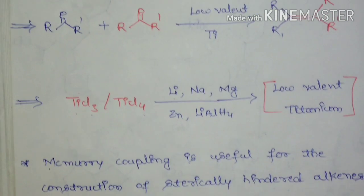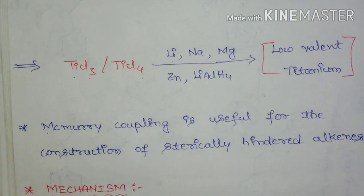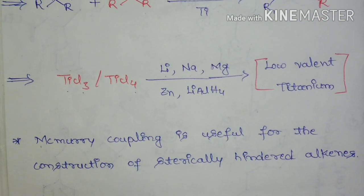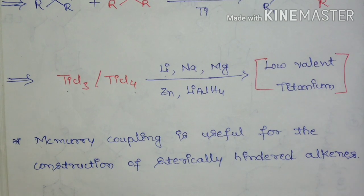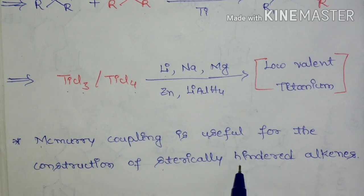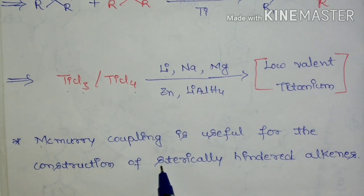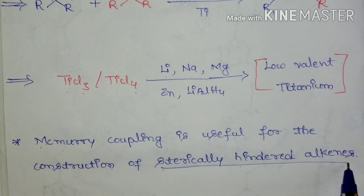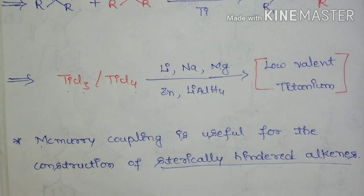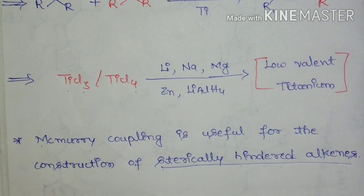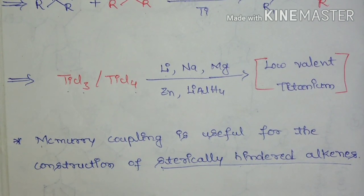What is the use of McMurray Coupling Reaction? McMurray Coupling Reaction is useful for the construction of sterically hindered alkenes. This is a very important usefulness of McMurray Coupling — we are going to get sterically hindered alkenes.